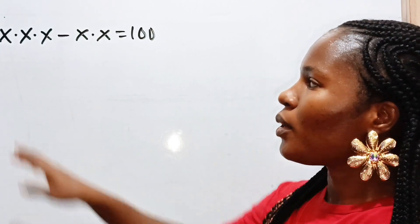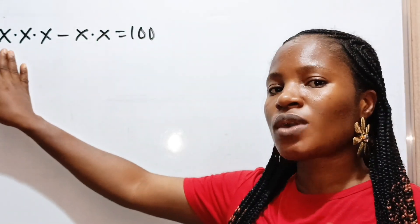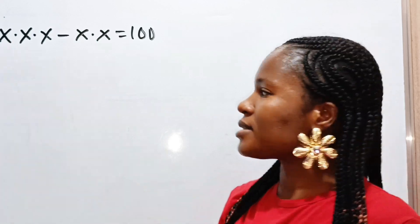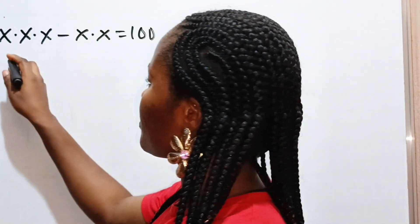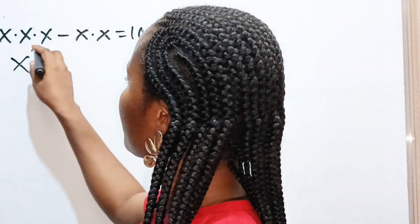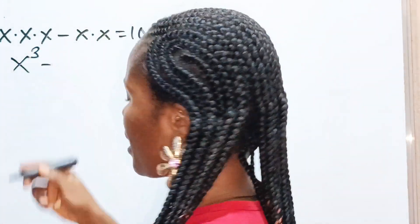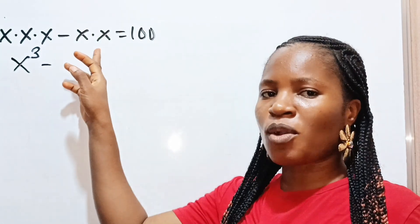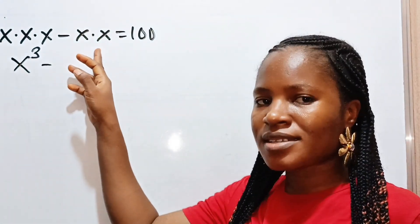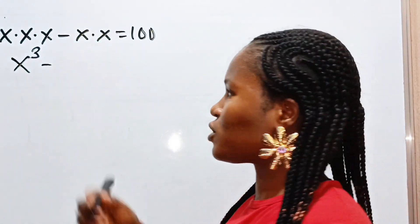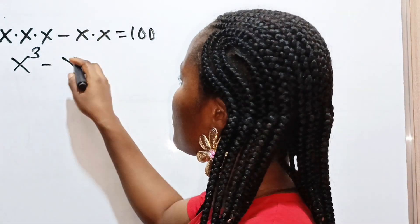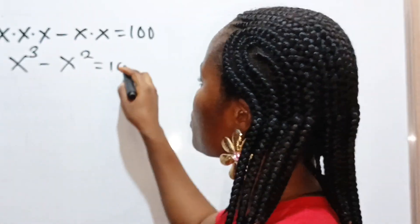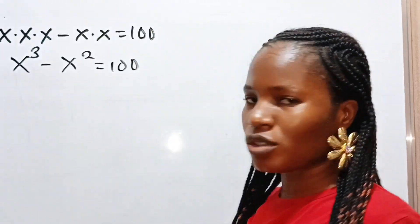Now first, this is equal to x to the power of 3, minus this, which is equal to x to the power of 2. So x cubed minus x squared is equal to 100.